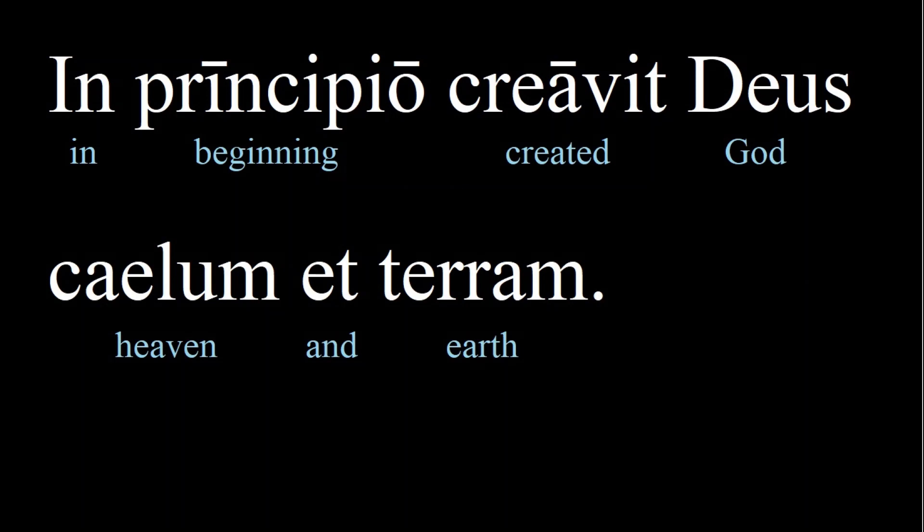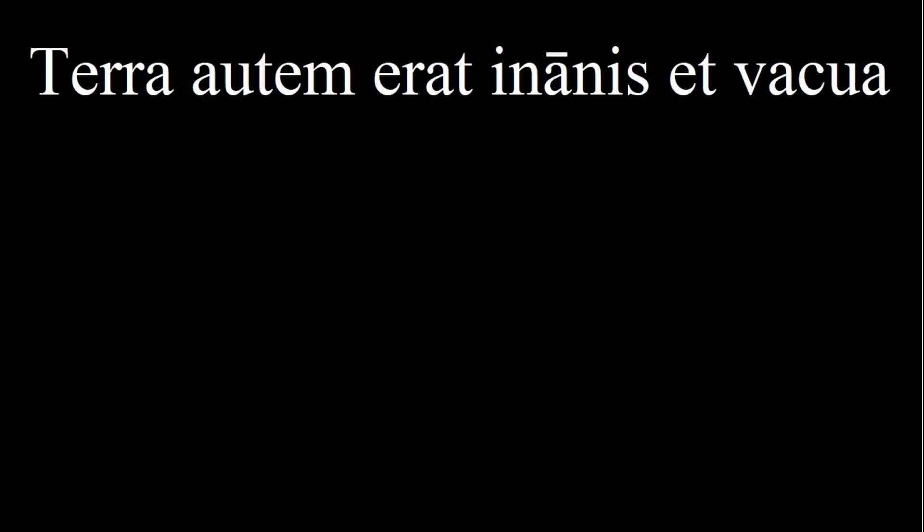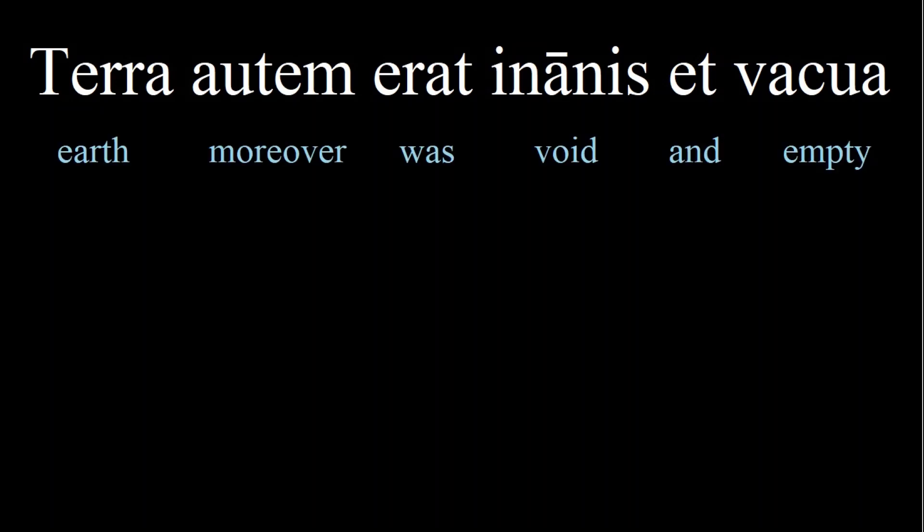The next phrase is a description, so it's in the imperfect tense. 'The earth, moreover, was void and empty.' The last two words are easy to recognize once you see the connection to 'inane' and 'vacuous.' Inanis is third declension, as we studied in the last lesson, and vacua is obviously first declension. The word autem is a conjunction with many different meanings — it often means 'however,' but it can also just mean 'moreover' or 'and.' It was probably used to avoid repeating et over and over, since that is what the next phrases begin with.